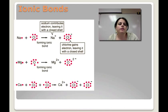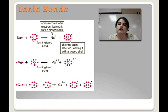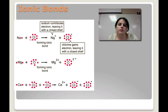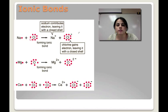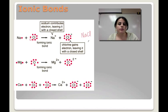Looking at some more ionic bond examples. Sodium has one valence electron and it's looking to get rid of it. Chlorine is looking for one more — chlorine has seven valence electrons. Sodium will transfer its one electron to chlorine. When that happens, sodium gets a positive one charge and chlorine gets a negative one charge. They form ions: a cation and an anion. Opposites attract — negative one and positive one combine — and we get sodium chloride, or table salt.